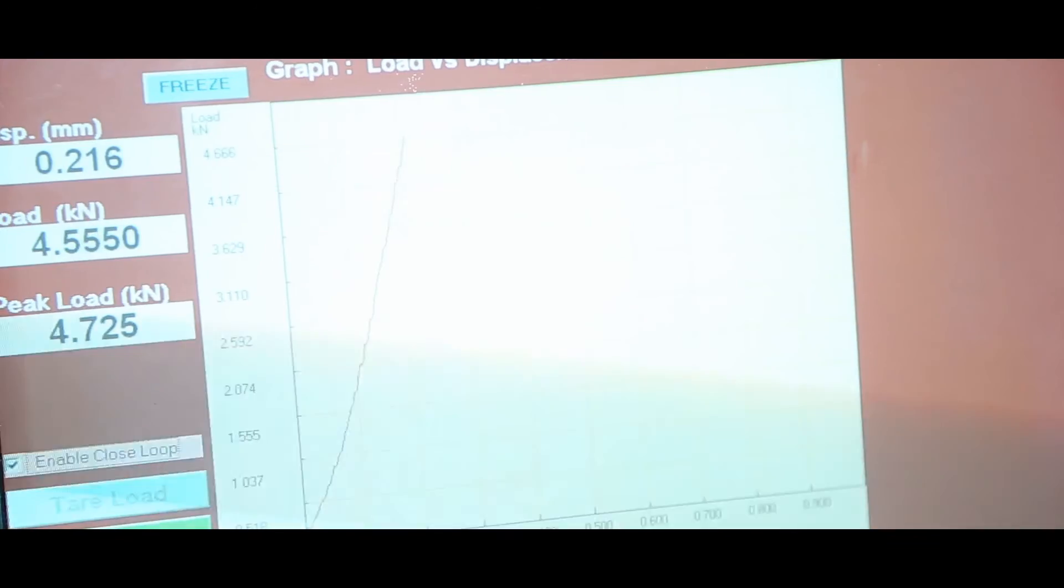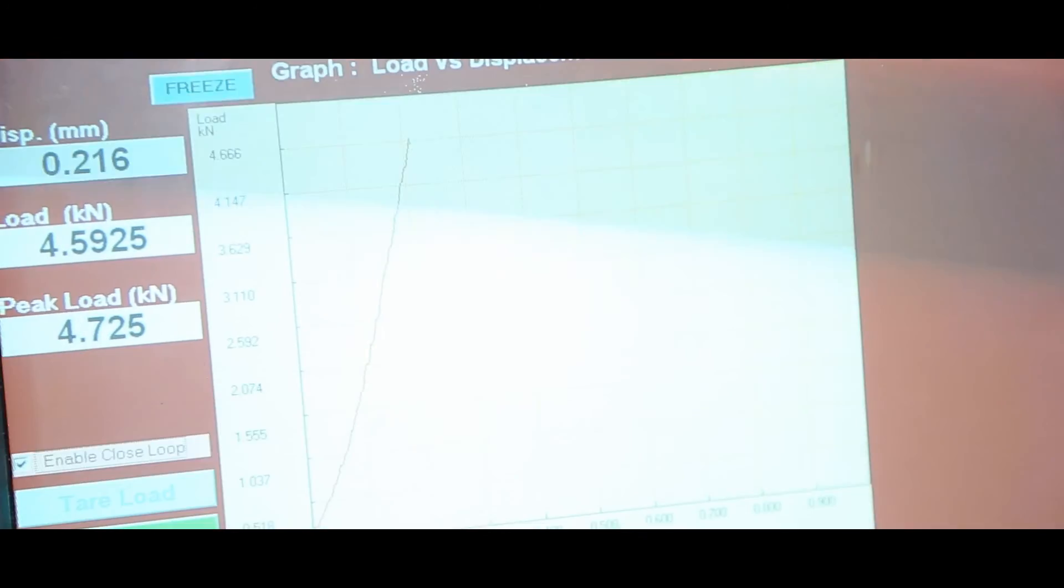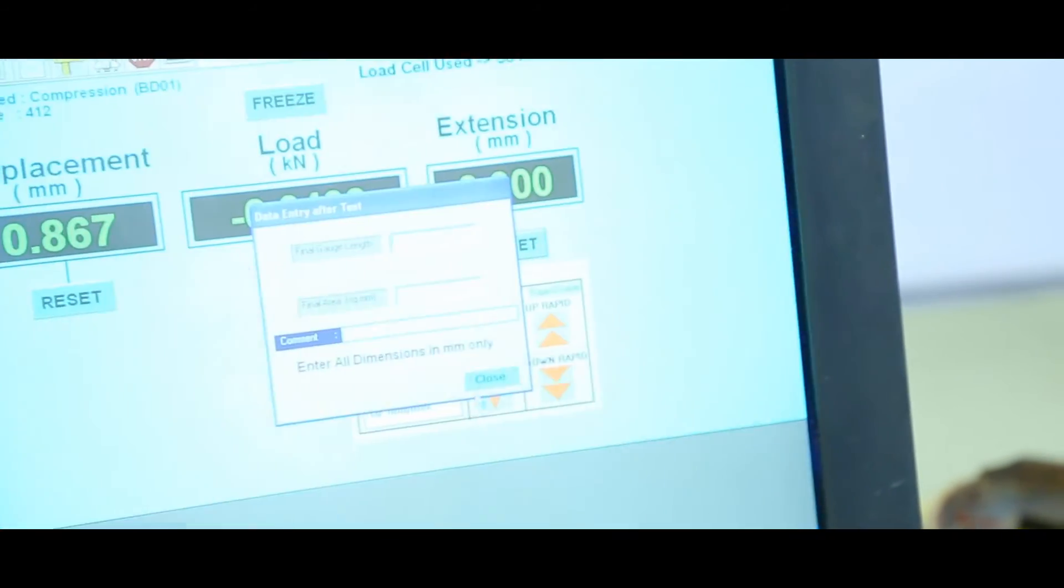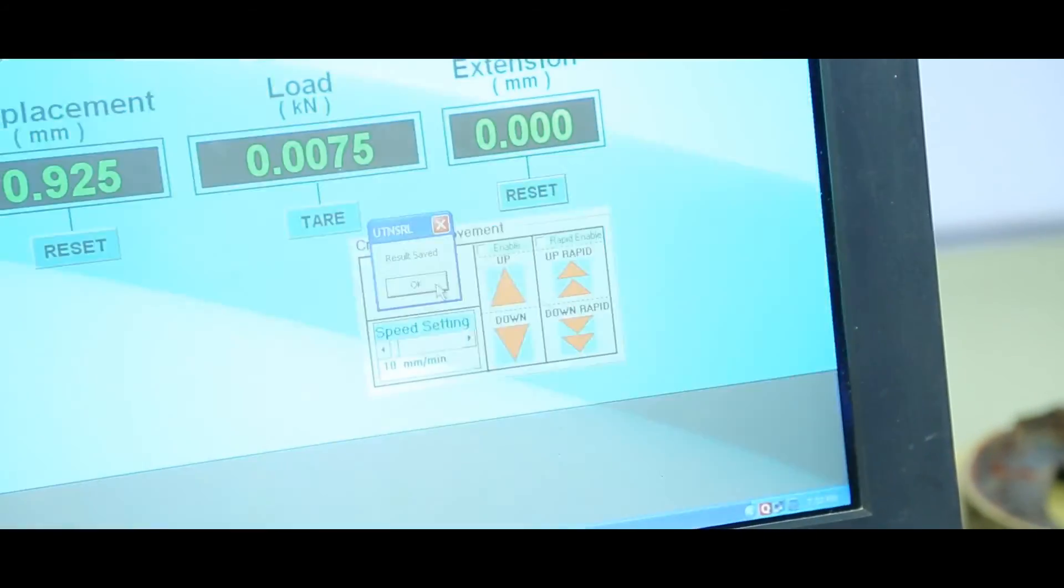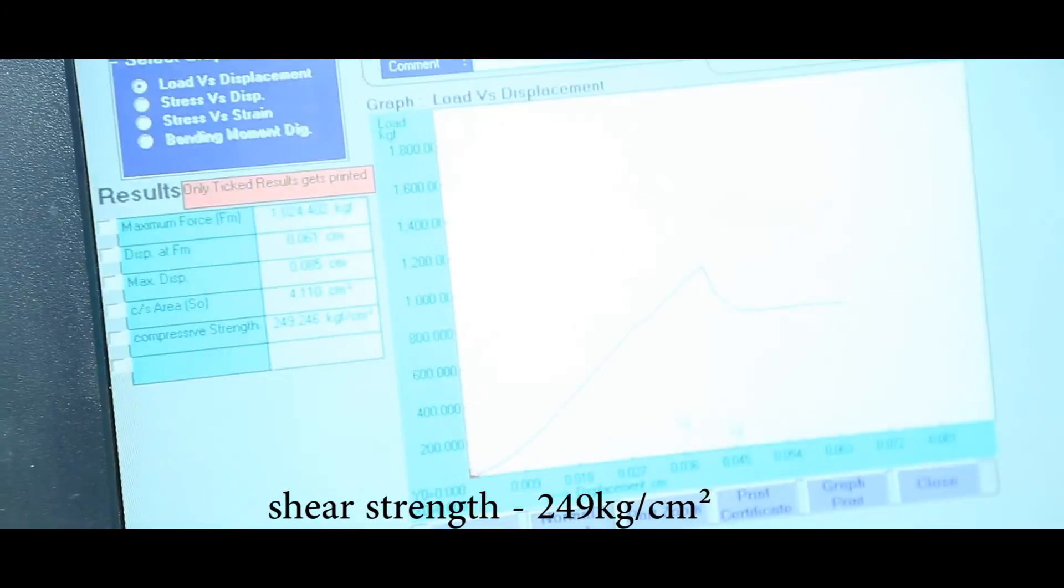Let us have a look at the results. The joint is able to withstand 4.72 kilonewtons of pullout force. This converts into 249 kilograms per square centimeter of shear strength.